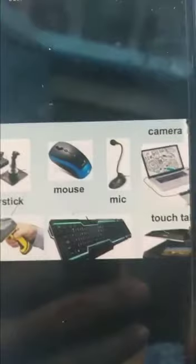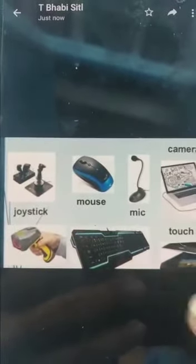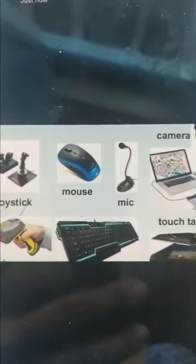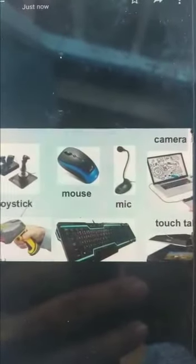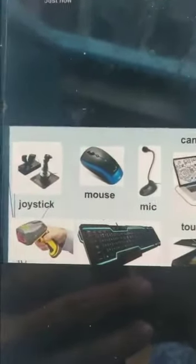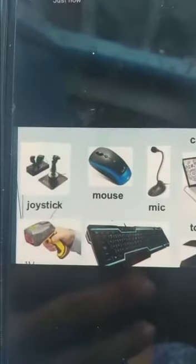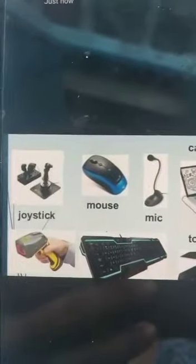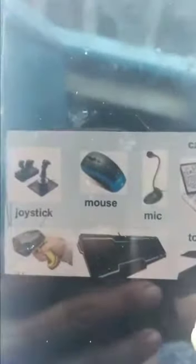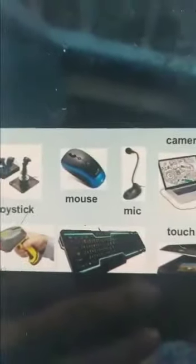So can you see this image? These all are the input devices. Like joystick, mouse, mic, touch, touch screen, camera, keyboard and biometric device, like scanner. So these all are our input devices that we are going to see today.